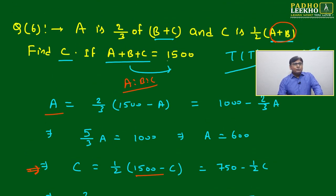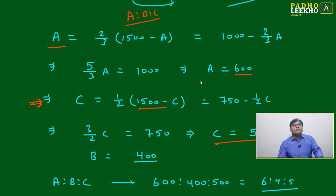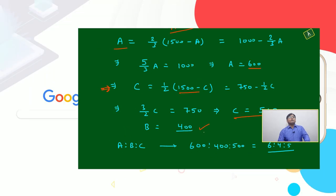You got the answer. But further, if you want to solve, two equations are given, two variables - we can find very easily. If two equations are given, we can find two variables very easily. Then here A will come 600, C you got 500.